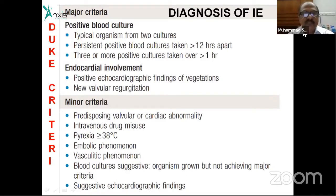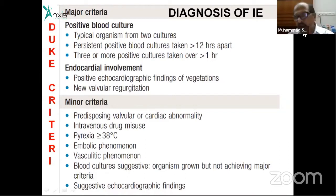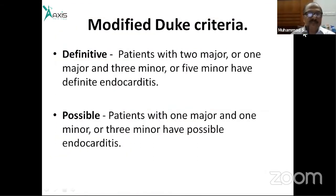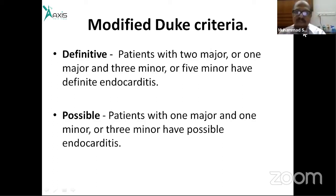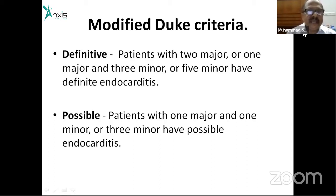To confirm a definite diagnosis by the Duke criteria, you need two major criteria, or one major plus three minor criteria, or five minor criteria. If only one major and one minor criterion are met, this constitutes a possible diagnosis of infective endocarditis. This is the Duke criteria and diagnostic framework.